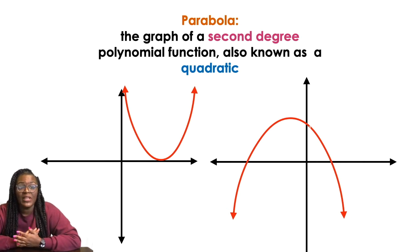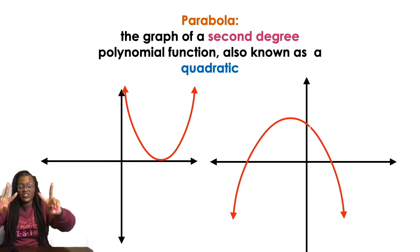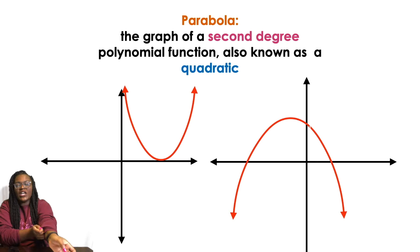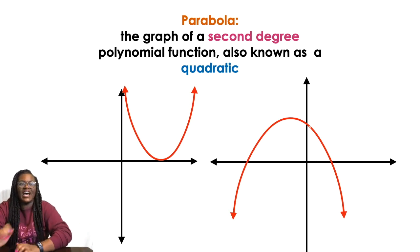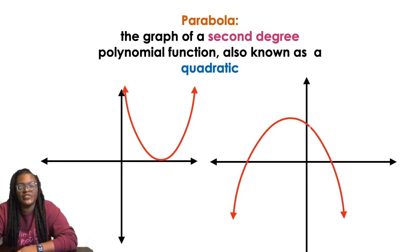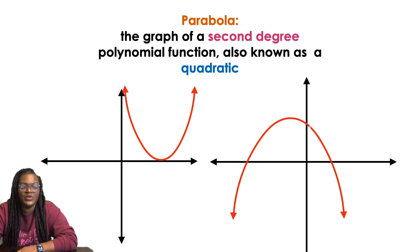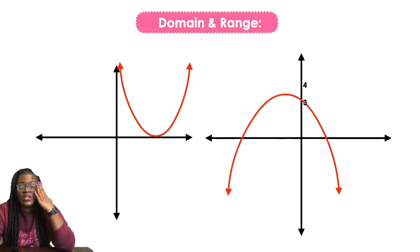Okay, so a parabola is the graph of a second-degree polynomial function, known as a quadratic. And they make these like U-shaped curves. It could either look like a happy face or like a frowny face.